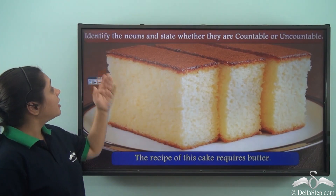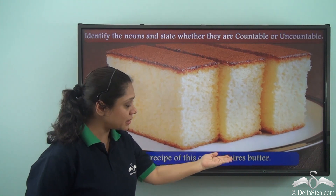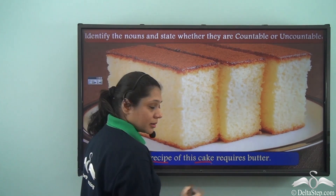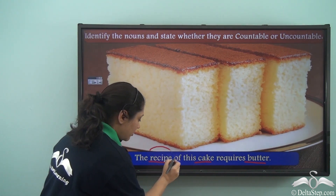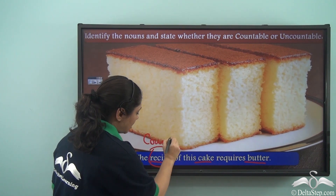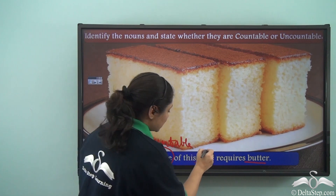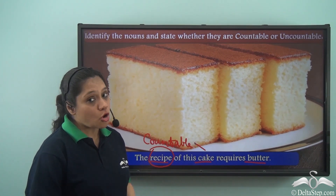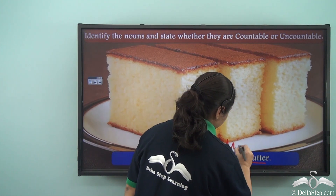Now let us identify the nouns in this sentence and state whether they are countable or uncountable: 'The recipe of this cake requires butter.' The nouns are recipe, cake, and butter. Can we count recipes? Yes — so recipe is a countable noun. Can we count cakes? Yes — so cake is also a countable noun. Can we count butter with numbers? No, it does not answer 'how many butter.' So butter is an uncountable noun.